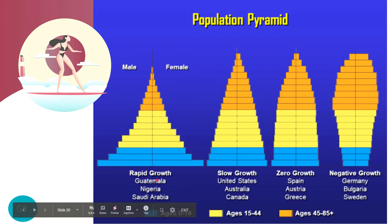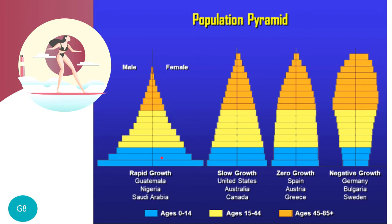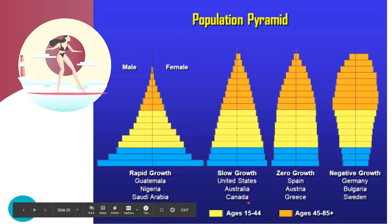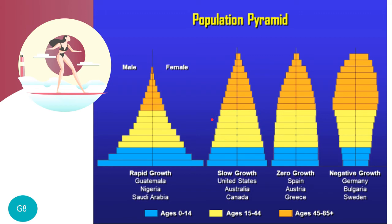Countries such as Guatemala, Nigeria, and Saudi Arabia have more children than adults and older people, so they are undergoing rapid population growth — the younger generation will eventually move into the adult and older categories. For countries such as the United States, Australia, and Canada, they have relatively few children, tending to follow replacement level fertility — adults are having just enough children to replace themselves — resulting in slow or near-zero growth.